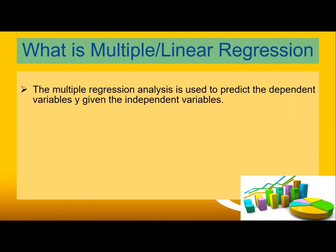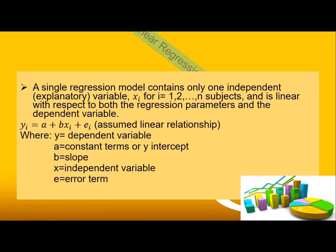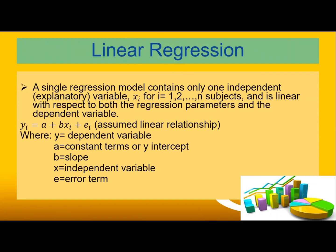We have here y and the linear regression equation. A single regression model contains only one independent or explanatory variable x sub i, for i = 1, 2, and so on. It is linear with respect to both the regression parameters and the dependent variable y. The equation assumes a linear relationship: y is equal to a plus b times x sub i plus the margin of error.